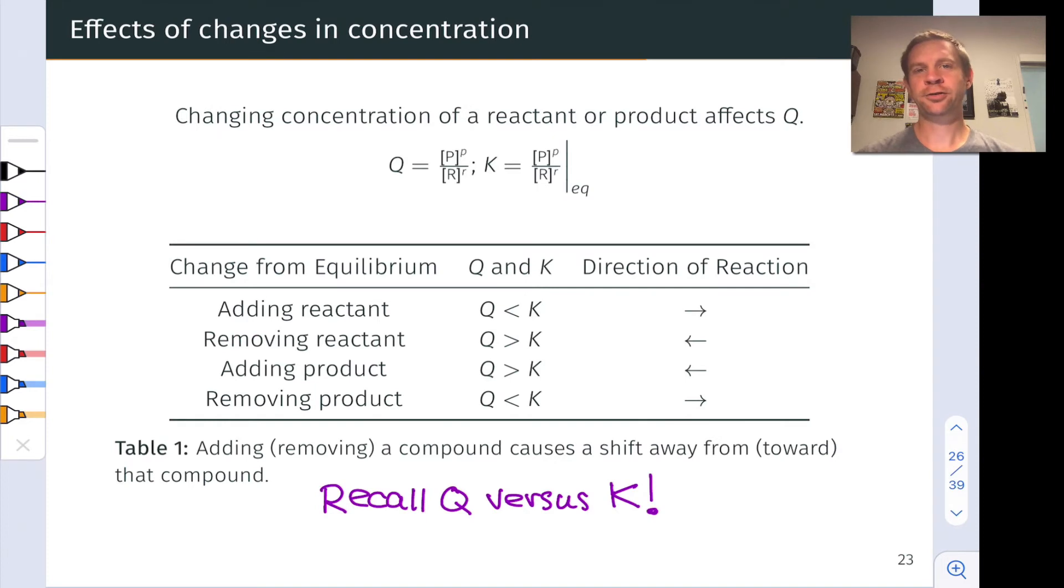Let's talk first about concentration. Adding or removing a reactant or product to modify the concentration of that species that we've added or removed. The basic idea here is that changing the concentration of a reactant or product affects Q. If we start in a system that is in equilibrium, changing a concentration will knock it out of equilibrium, and the system will respond to return Q to the value of K.